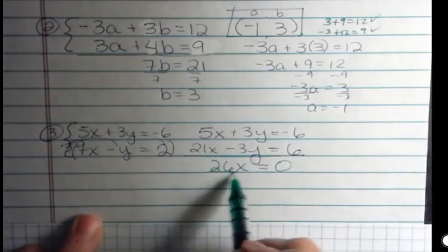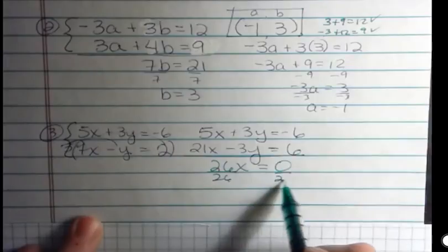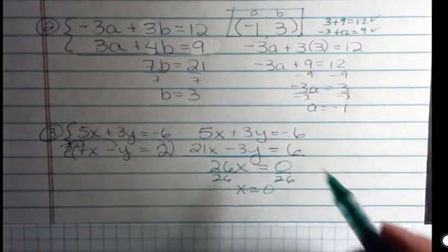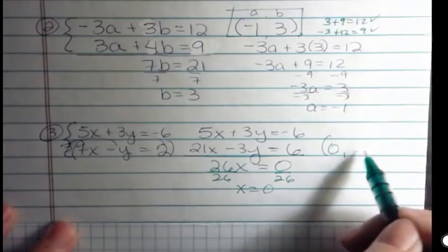Hey, there's nothing wrong with zeros. Don't knock it. But 0 divided by anything is still 0. So I get x equals 0. Perfectly legitimate answer.